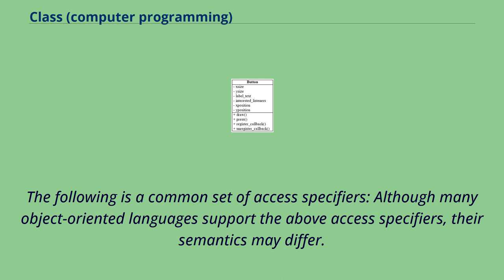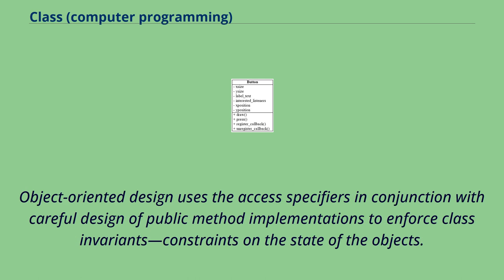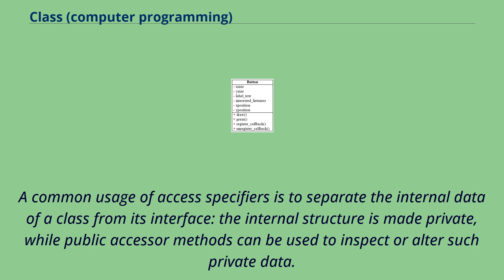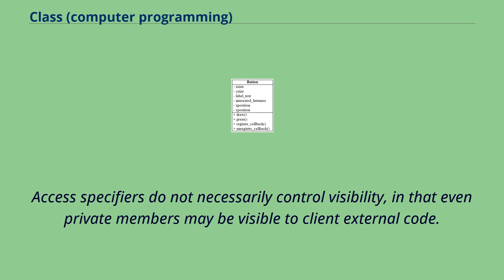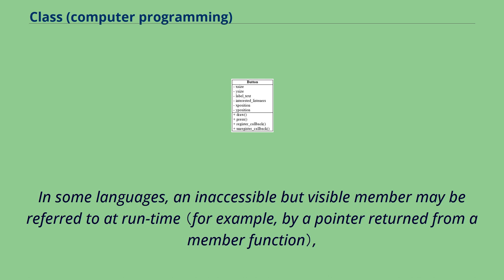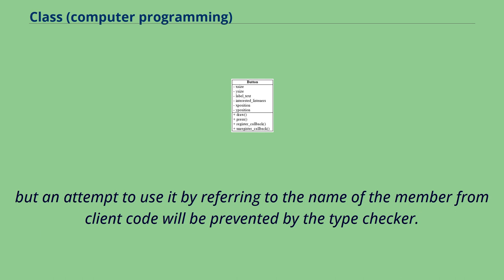The following is a common set of access specifiers. Although many object-oriented languages support access specifiers, their semantics may differ. Object-oriented design uses access specifiers in conjunction with careful design of public method implementations to enforce class invariants — constraints on the state of the objects. A common usage of access specifiers is to separate the internal data of a class from its interface. The internal structure is made private, while public accessor methods can be used to inspect or alter such private data. Access specifiers do not necessarily control visibility, in that even private members may be visible to client external code.